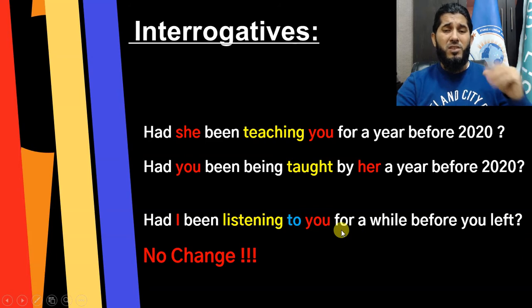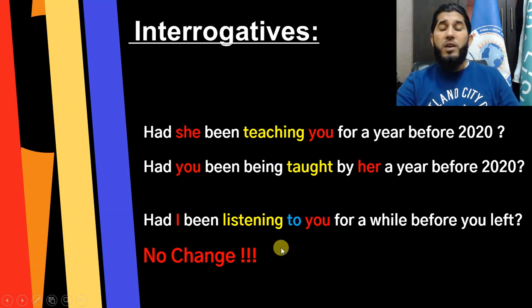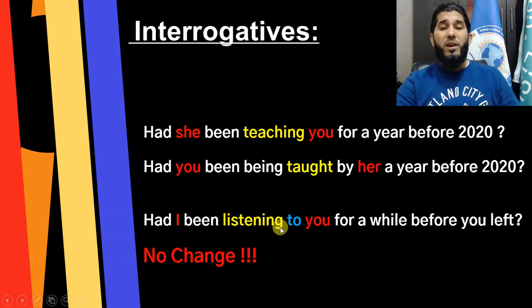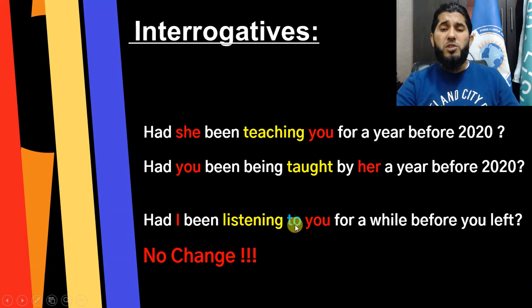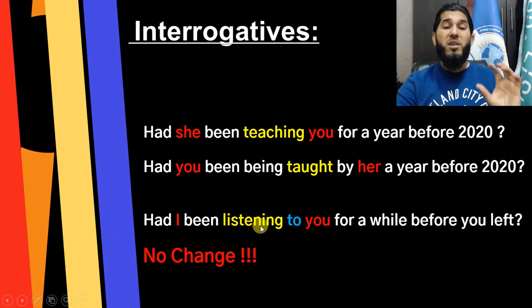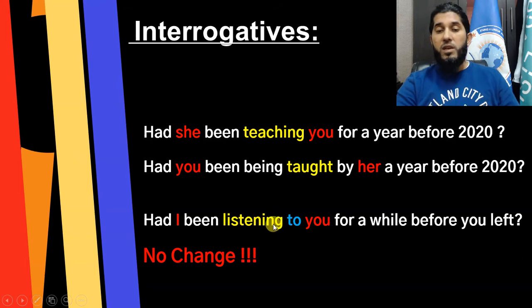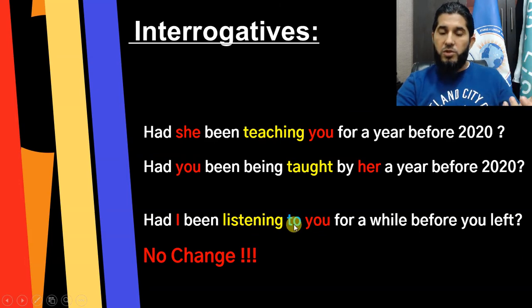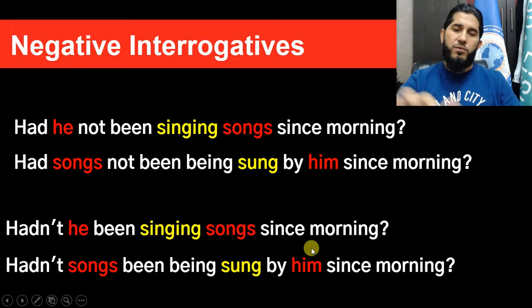This sentence is not changeable from active to passive form. After the main verb 'listening', there is no direct object — we cannot say 'had I been listening you.' There must be a preposition: 'listening to you.' When you see a preposition between the main verb and its noun, that noun is the object of the preposition, not the main verb. The main verb is intransitive and does not need an object, so the sentence cannot be changed to passive.